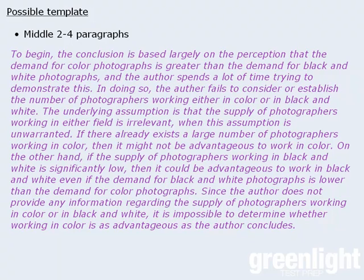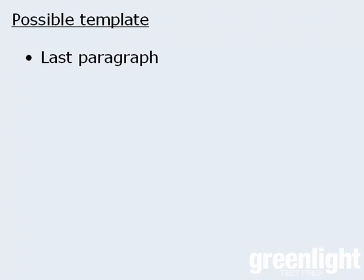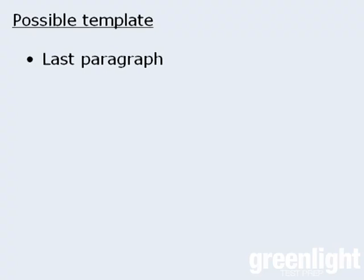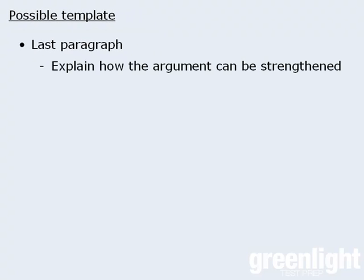Once you've written one or two more paragraphs concerning other flaws, you're ready for the last paragraph. This paragraph need not be very long — you just want to remind the reader of your main points and indicate that you've reached the end of your essay. For this template, we'll begin by explaining how the argument can be strengthened. The points you mention here will be related to some of the extra information that you identified earlier to help evaluate the conclusion.